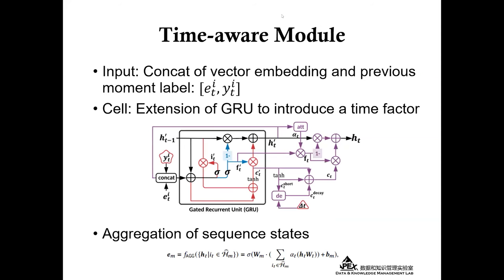The third part is the time-aware module. To make effective use of user feedback, we concatenate the item embedding with the user feedback from the previous moment as the module input. We combine an improved GRU and attention mechanism to model the user sequential patterns, considering the influence of the user's previous feedback and the time interval in the browsing history. In this way, we get a hidden state for each item in the sequence. We then use an attention mechanism to aggregate these hidden states to get the final representation of the sequence.